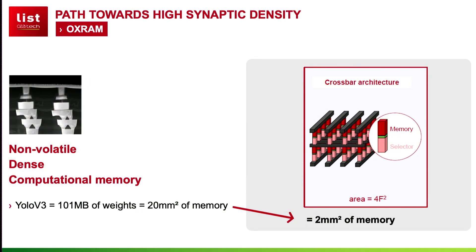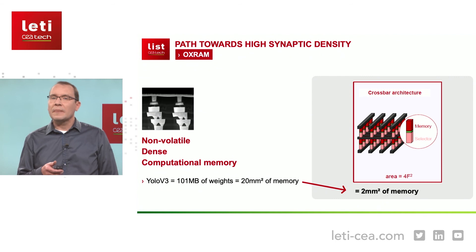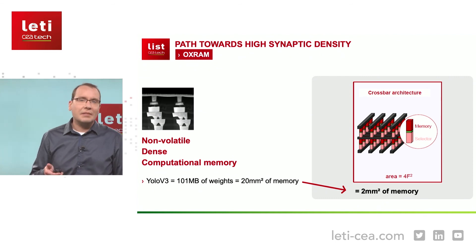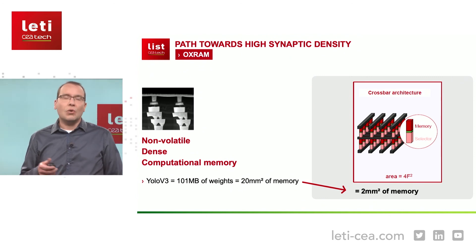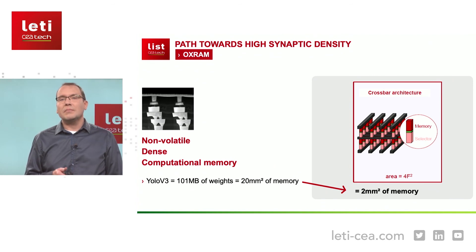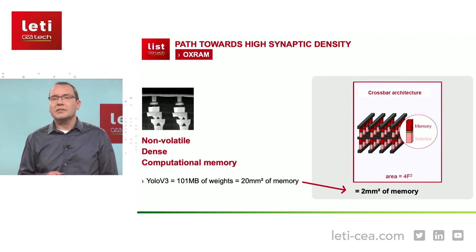That was for computing and storing the activation values. For the weights, you can use non-volatile memories. This is convenient since weights do not change often — there is no cyclability issue, and the benefit that comes for free is that you do not have to reload the weights each and every time you power up your circuit. At Leti, we have demonstrated with our resistive RAM technology that it is scalable and that it can handle multiple bits, up to 4 bits in the future. We are working to further increase the density of this embedded memory by a factor of 10x, by replacing the access transistor with a back-end selector.